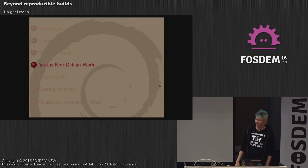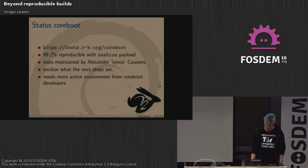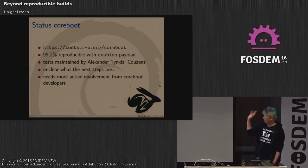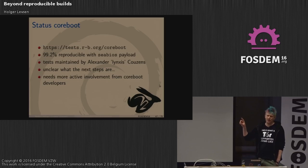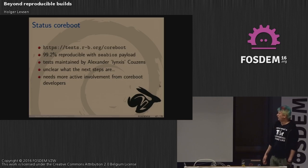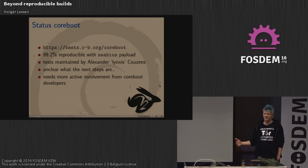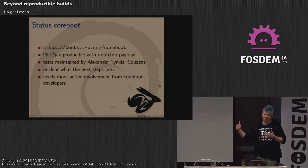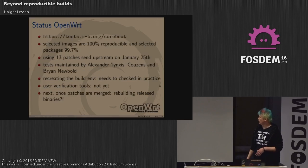Now to the non-Debian world — and all the errors are mine. We do test coreboot: out of 250 coreboot images, two are not reproducible with the cBIOS payload. It's a bit unclear what the next steps are because coreboot doesn't release binaries. This work is mostly Alexander Couzens'.